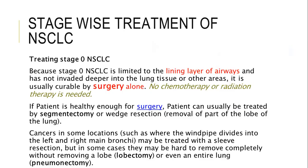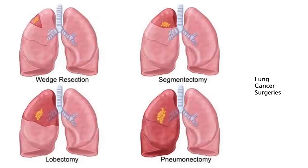Stage-wise treatment of non-small cell lung carcinoma: at stage 0, because the cancer has not spread and is only in the lining layer of the airways, no chemotherapy or radiation therapy is needed. The cancer can be cured and contained by surgery alone. Surgeons perform segmentectomy or wedge resection — wedge resection is the removal of a small part of the affected area, while segmentectomy involves extracting a larger chunk of the affected lung.